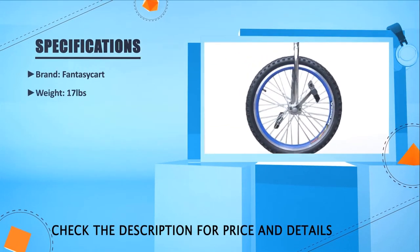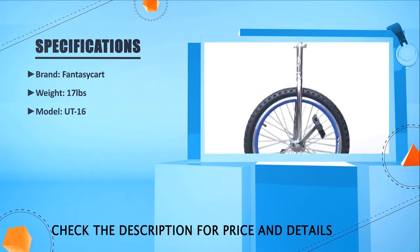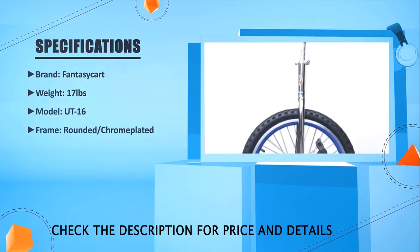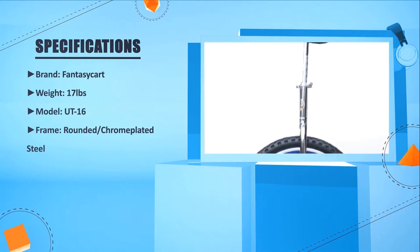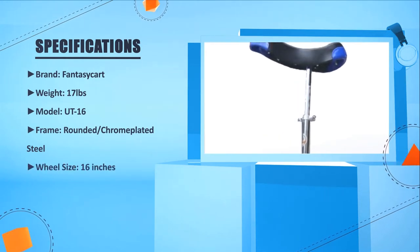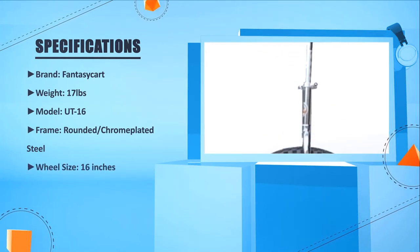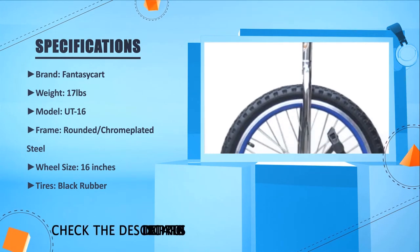Brand: Fantasicart. Weight: 17 pounds. Model: UT16. Frame: rounded or chrome plated steel. Wheel size: 16 inches. Tires: black rubber.